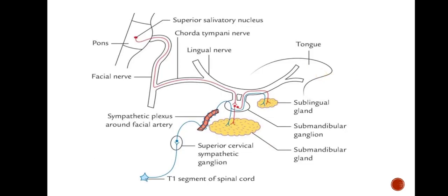Let's go in detail about the sub-mandibular ganglion. Red color denotes the parasympathetic nerve supply whereas blue color denotes the sympathetic nerve supply. The pre-ganglionic parasympathetic fibers arise from the superior salivatory nucleus, which is present in the pons. It passes through the facial nerve, chorda tympani nerve — which is a branch of the facial nerve — and through the lingual nerve, which is a branch of the trigeminal nerve. It relays in the sub-mandibular ganglion and gives its post-ganglionic branches to the sublingual and sub-mandibular gland.